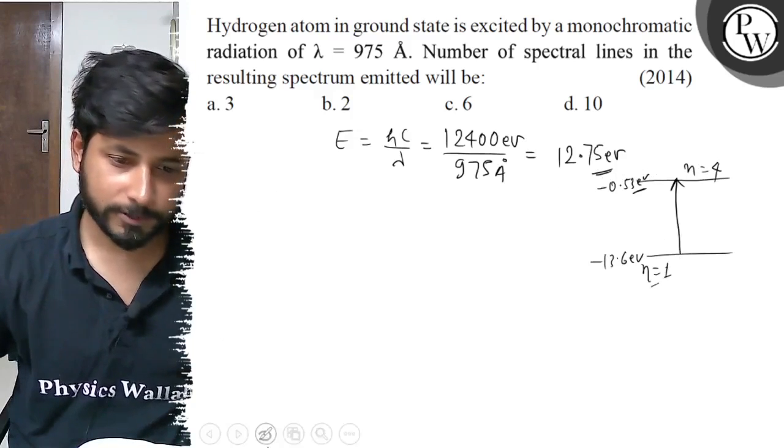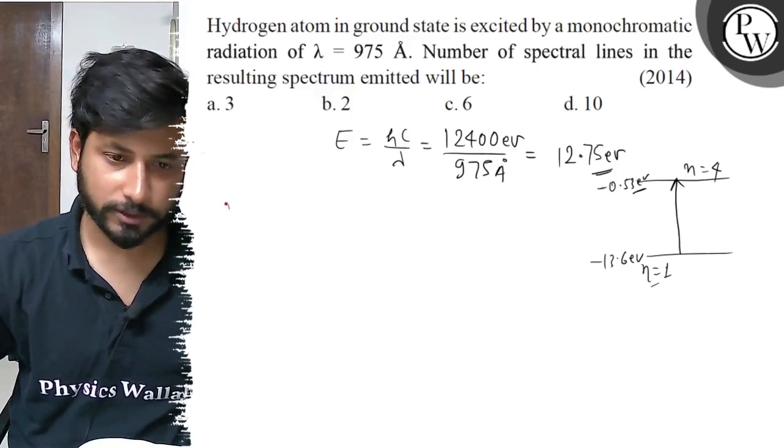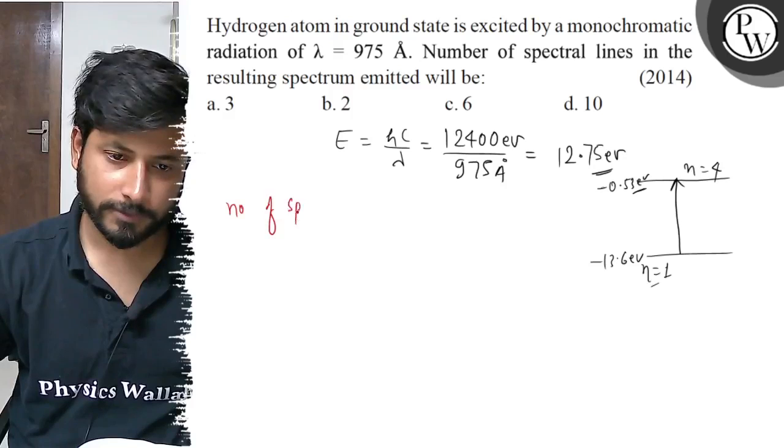Now, number of spectrum lines, how can we get the formula? Number of spectrum lines equals n into n minus 1 by 2.